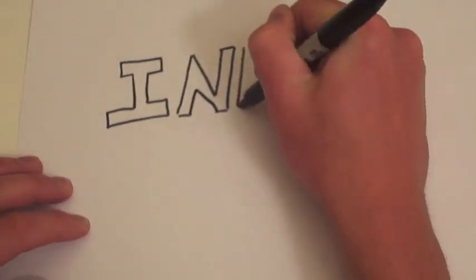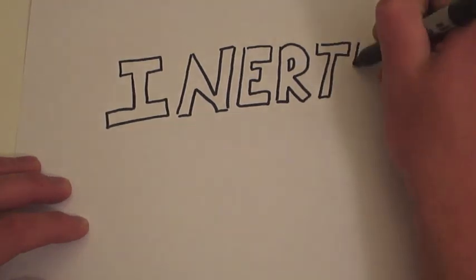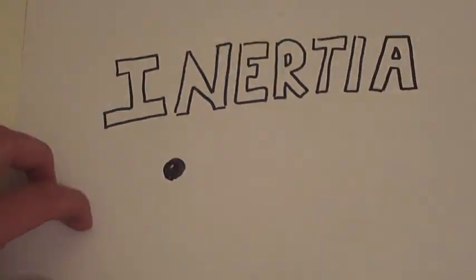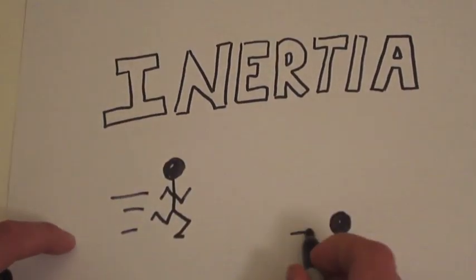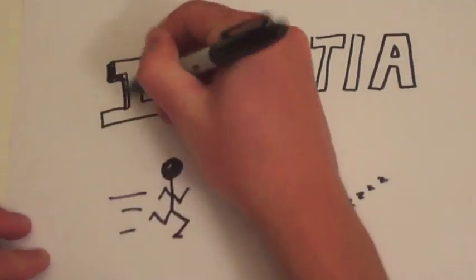Let's begin with inertia, the first law of motion. The first law of motion states that an object in motion will stay in motion, and an object at rest will stay at rest unless acted upon by an unbalanced force.